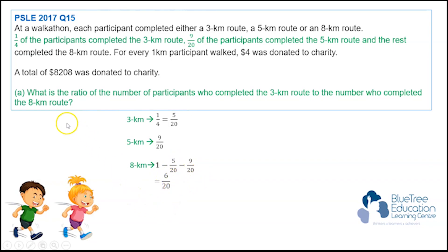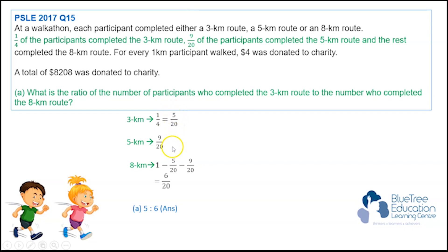To answer part A, all you need to do is pull out the information from the numerator of the 3km, which is 5, and from the 8km, the numerator is 6. So the answer is 5 to 6. And this is how we solve for part A.